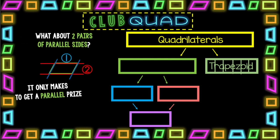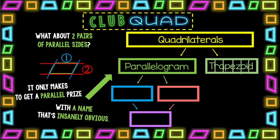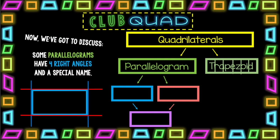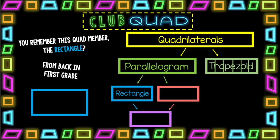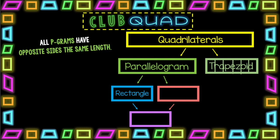What about two pairs of parallel sides? It only makes sense to get a parallel price with a name that's insanely obvious. A parallelogram. Now we gotta discuss some parallelograms have four right angles and a special name. You remember this quad member? The rectangle from back in first grade.